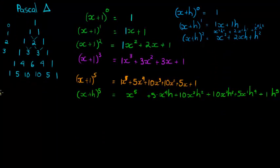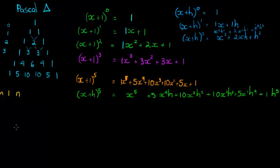Now what would happen in the nth row? In the second row the second term is 2; in the third row the second term is 3; in the fourth row the second term is 4; in the fifth row the second term is 5. So in the nth row, the first term would be 1 and the second term would be n.